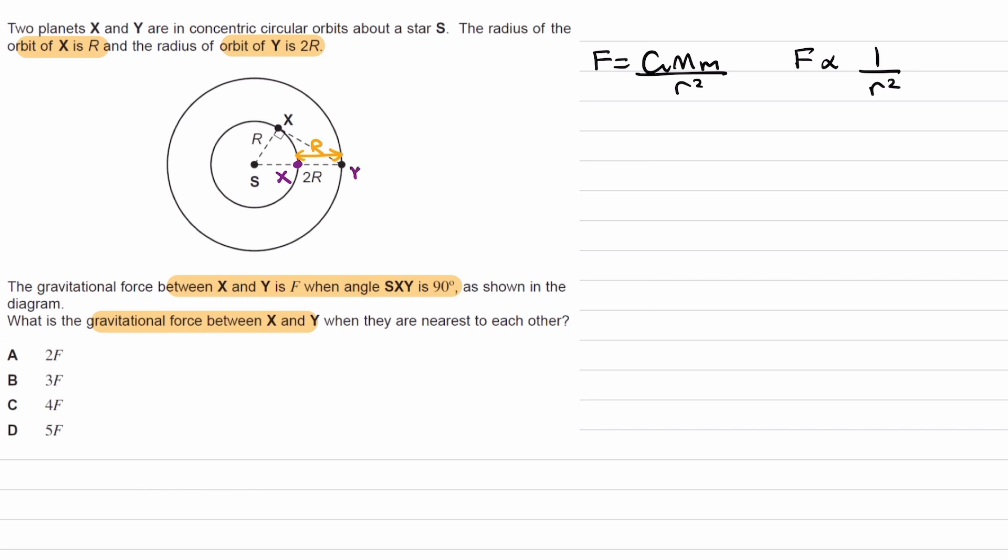This length, the original separation, we can work that out using Pythagoras' theorem. The triangle looks like this, where this is a right angle, this is R, this is 2R.